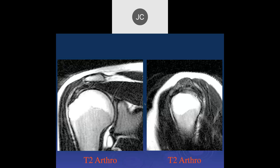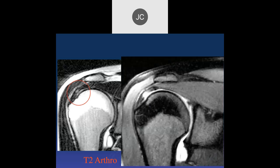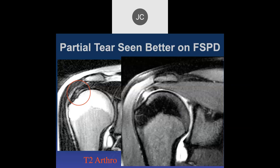It looks like we have a focal area of tendinosis at the junctional zone of the supraspinatus. Here's the T2 and the PD fat-sat. That area is accentuated by the magic angle. But there's a little bit of irregularity here — this patient was arthroscoped and this was a partial tear: an intrasubstance partial tear.